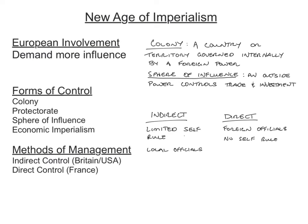In this new age of imperialism, Europeans demanded more influence. This wasn't the colonization of the 15th and 16th century in North and South America — they kind of learned from their mistakes, since by this time all those countries were independent. There were several types of control they used. A colony is a country or territory governed internally by a foreign power — like the United States before independence, which was an English colony governed by the British government. A sphere of influence is an outside power controlling trade and investment, which you'll see in our next lesson on Asian imperialism in China.